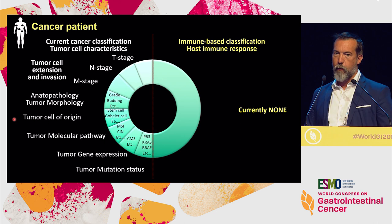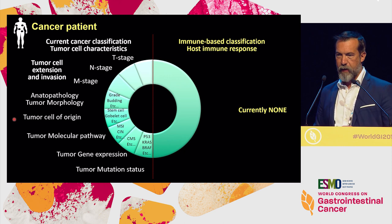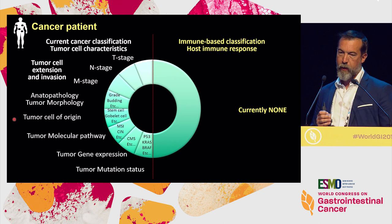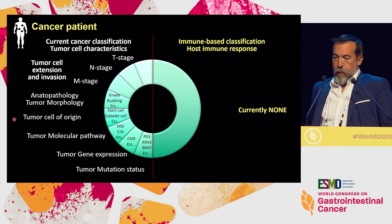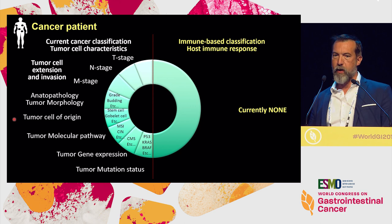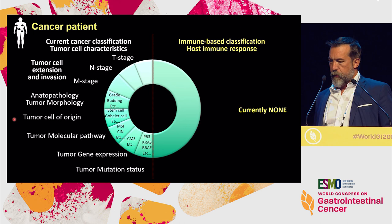Tumor classifications are based on tumor extension, tumor invasion, TNM staging, anatomical pathology, tumor morphology, tumor grade, the tumor cell of origin, molecular pathways, genomic alterations of tumor cells, microsatellite instability, chromosomal instability. We heard yesterday about tumor gene expression signature CMS, and of course the mutation status of the tumor cell is done.